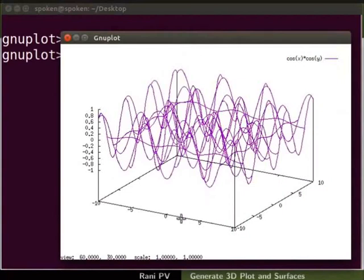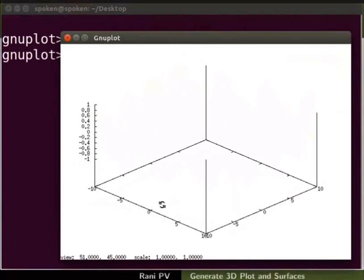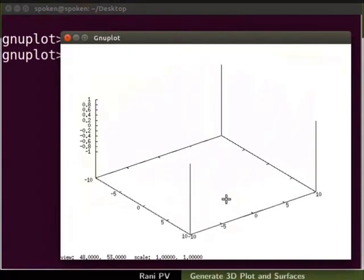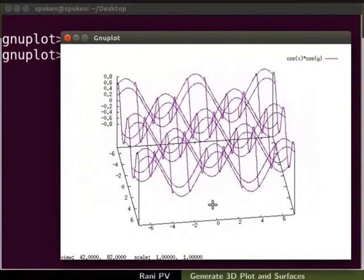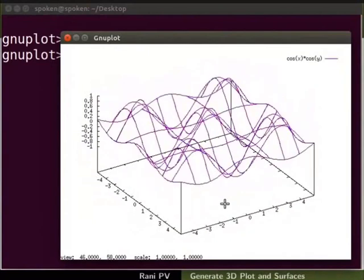Besides x and y, the third axis is the value of the function in the plot. Hold down the left mouse key, move the mouse to rotate the graph and change the viewing angle. Zoom in slightly into the graph to see a wavy surface. Notice the surface is plotted in a wide mesh style.